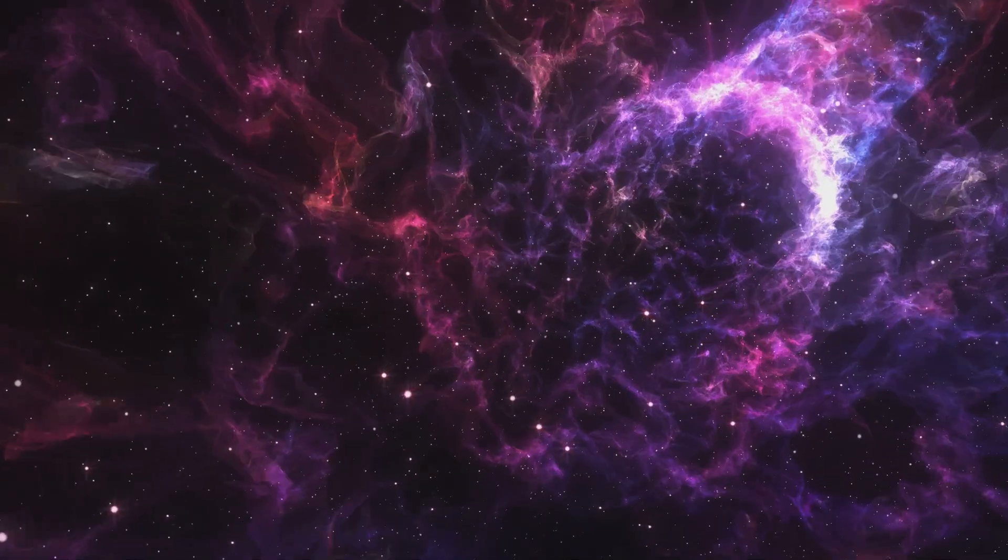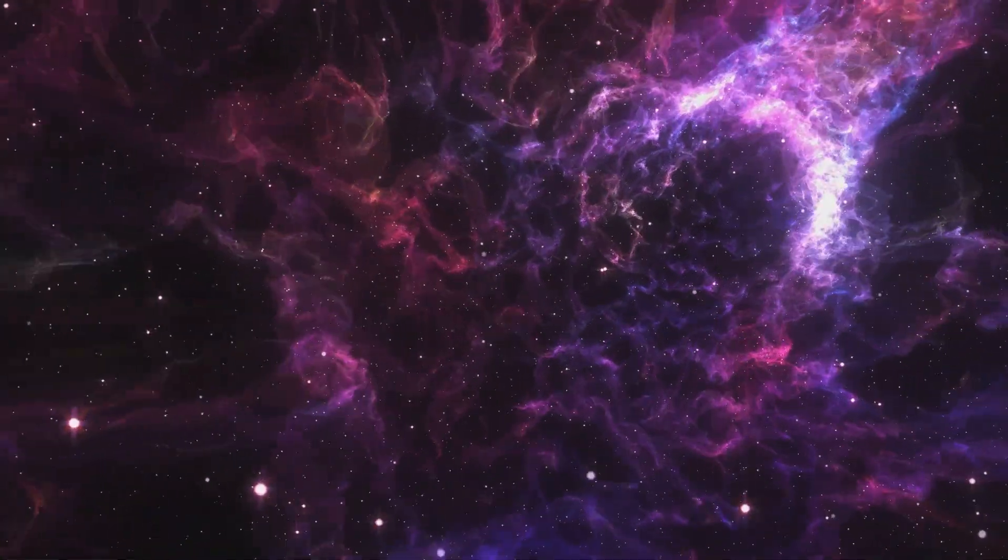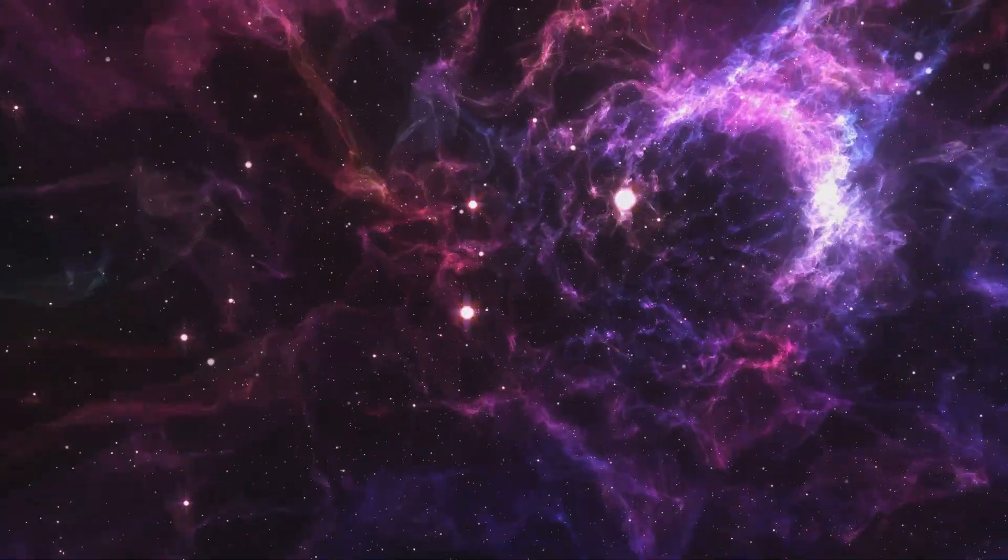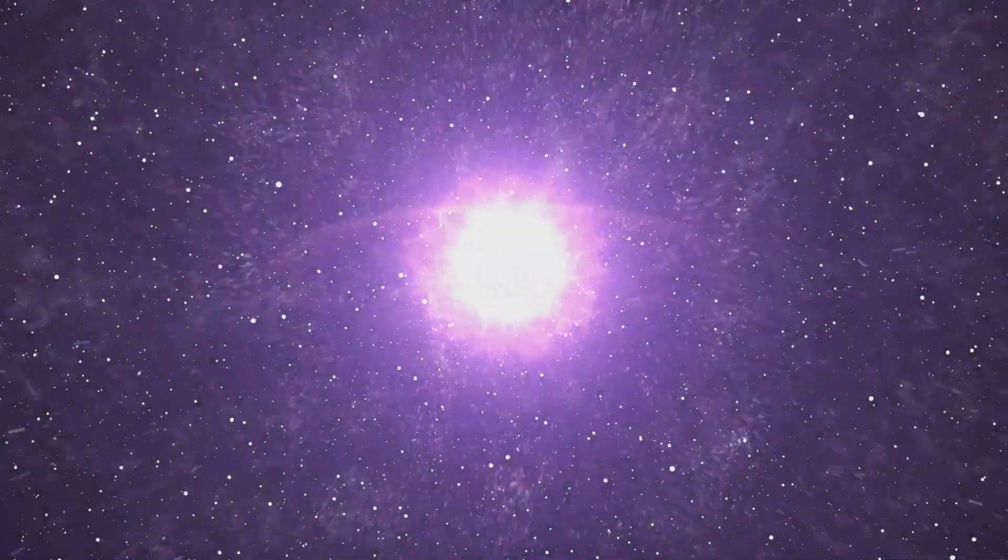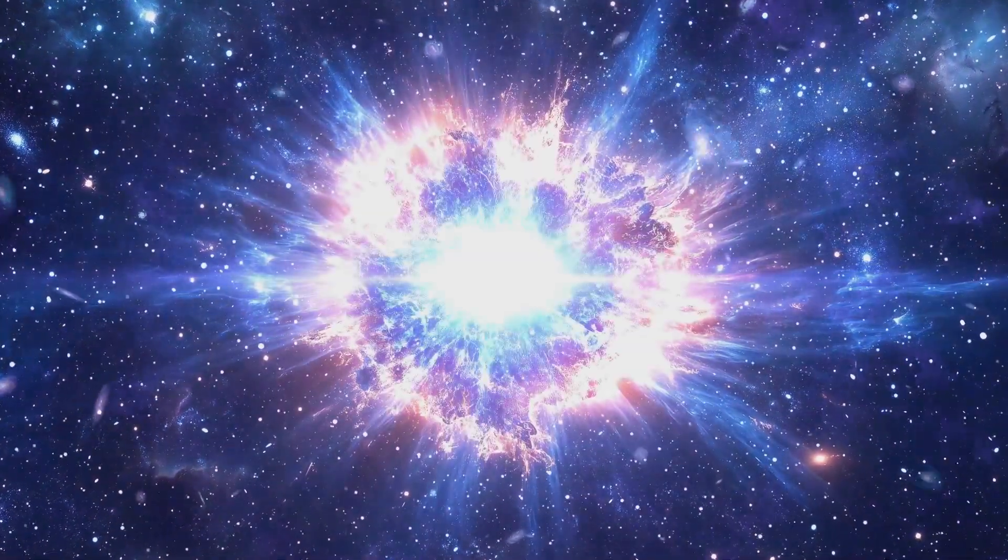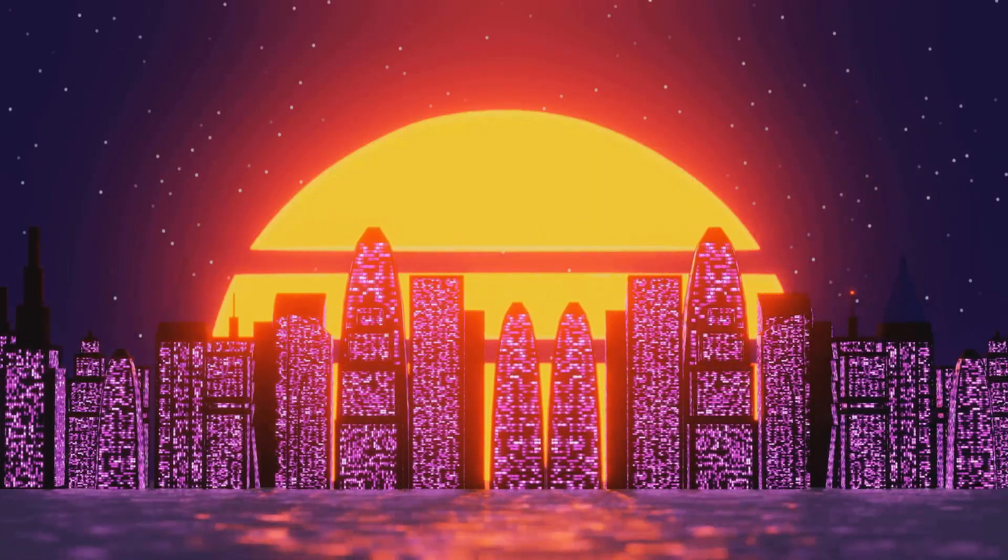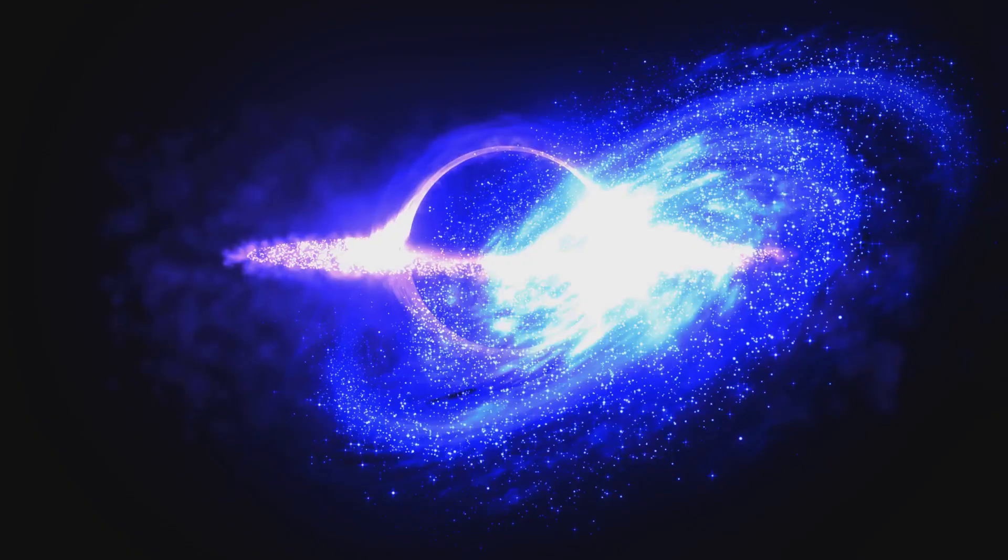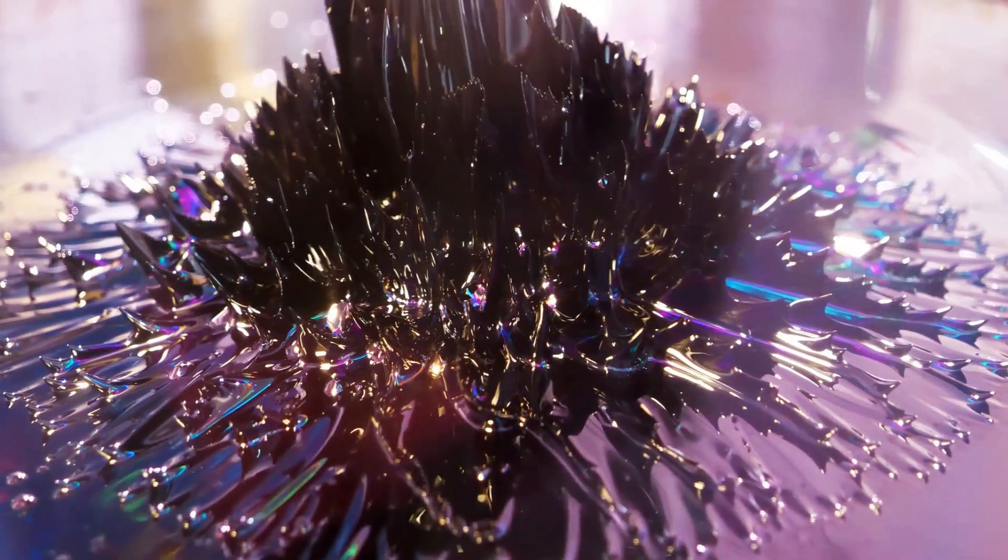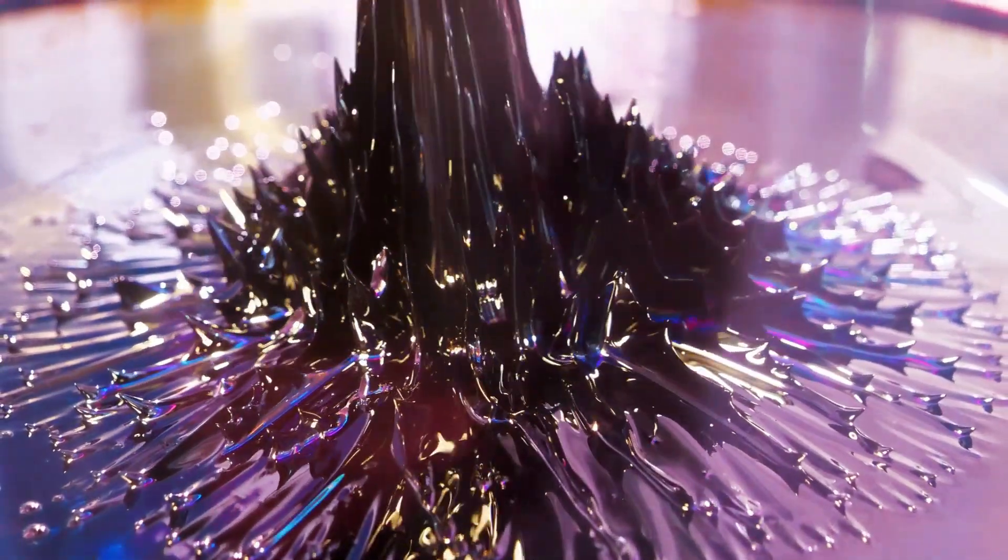The outer parts of the star explode into space, creating beautiful nebulae that light up the cosmos. But the star's core is left behind, squeezed by gravity into a super-dense ball called a neutron star. Imagine squeezing our sun into a ball the size of a city. That's how dense a neutron star is. A tiny spoonful of it would weigh billions of tons on Earth.